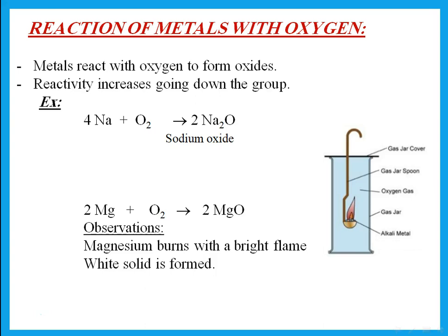Regarding the reaction of metals with oxygen: all metals will burn in oxygen, and what is formed is called an oxide. For example, sodium reacts with oxygen to give sodium oxide. Please be familiar with balancing equations — when asked to write a symbol equation, it must be balanced; a word equation is just words. If we burn magnesium in oxygen, we get magnesium oxide. When magnesium burns, it burns with a bright flame, and magnesium oxide is formed as a white solid or white ash.